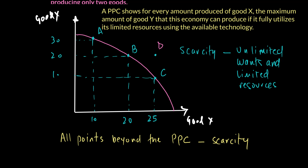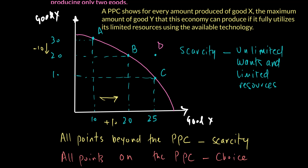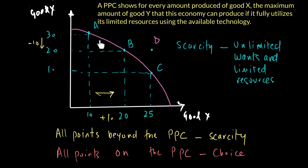Because of scarcity, people must make choices. If the economy is at point A (30 of Y and 10 of X) and wants more X — say 20 of X — it must sacrifice 10 of Y. All combinations A, B, and C on the PPC depict the concept of choice, showing the various choices the economy can make. Moving from A to B to get more X means sacrificing some Y, which leads to the concept of opportunity cost.